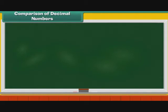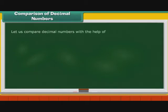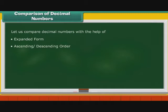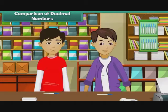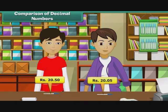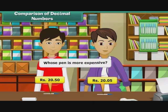Comparison of decimal numbers. To understand decimals better, we now compare decimal numbers with the help of expanded form, ascending and descending order. Let us look at some examples. Karan bought a pen for Rs. 20.50, while Ravi bought a pen for Rs. 20.05. Whose pen is more expensive?